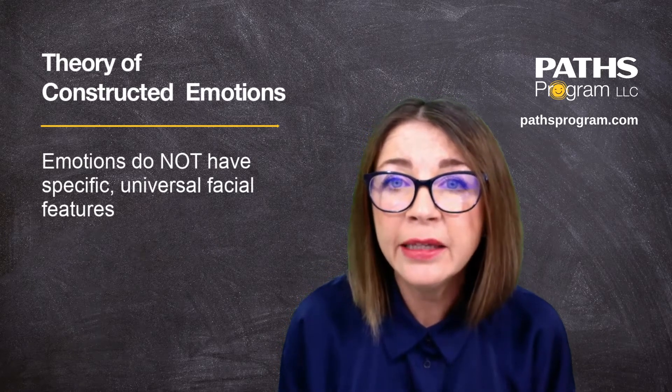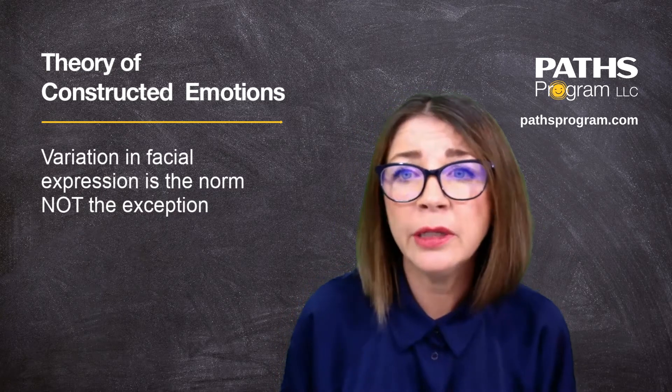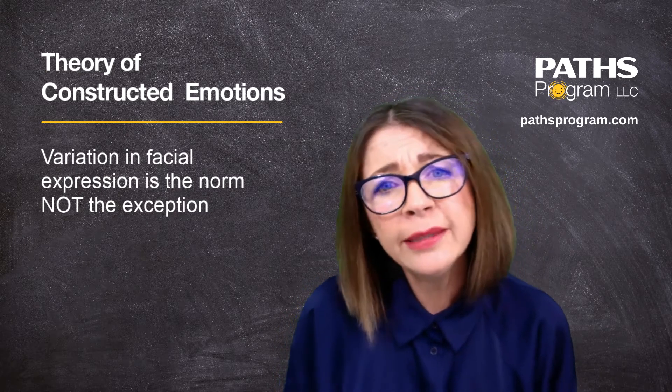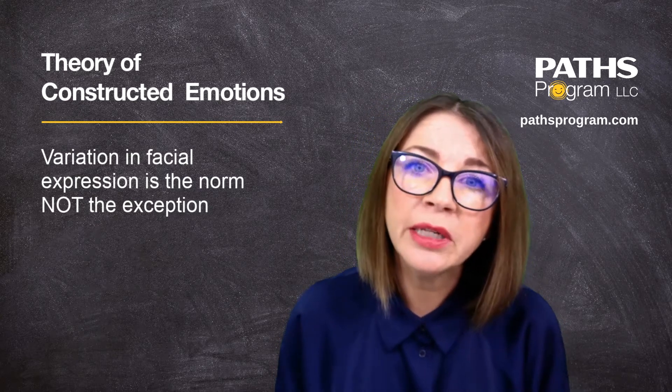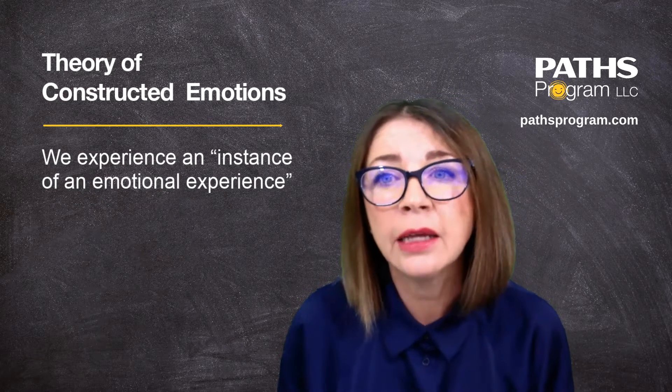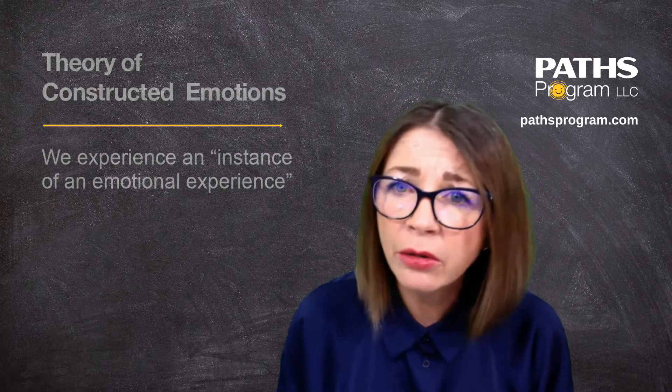Contrary to popularly held beliefs, emotions do not have markers or specific recognizable universal facial features. Take the experience of happy, for instance. Sometimes we smile, sometimes we cry, sometimes we show nothing on our face to indicate how we are feeling. When we say we're happy, we're not experiencing all the kinds of happiness that can be experienced — we are experiencing one instance of the happy emotion. The brain is predicting the sort of happy concept it thinks is appropriate in that moment, and it does it so rapidly that we do not perceive this guessing game at work.